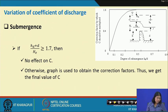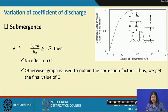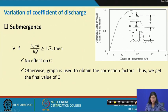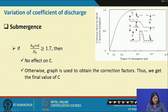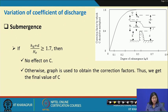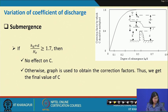Coming to the submergence problem: if (H_d + d) / H_e is greater than 1.7, there is no effect on C, the coefficient of discharge, where d is the depth of submergence and H_e is the total head. Otherwise, a graph is used to obtain a correction factor to get the final value of C.